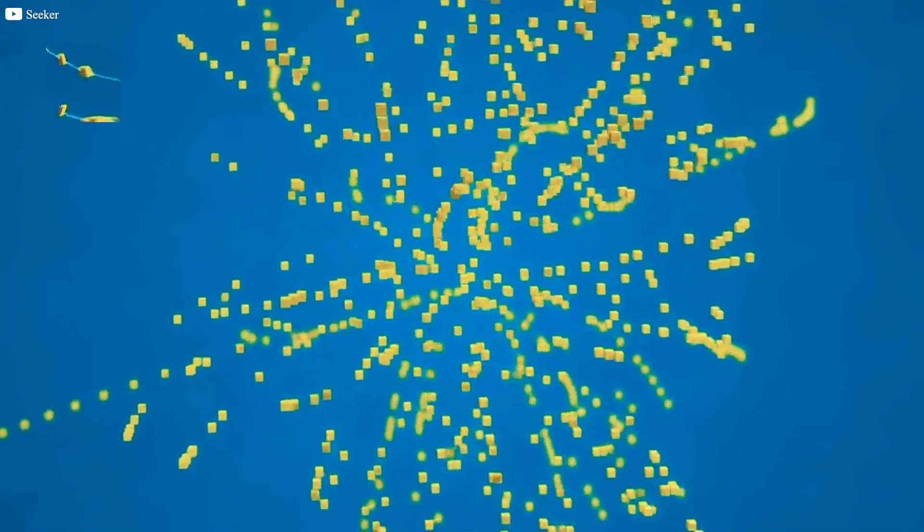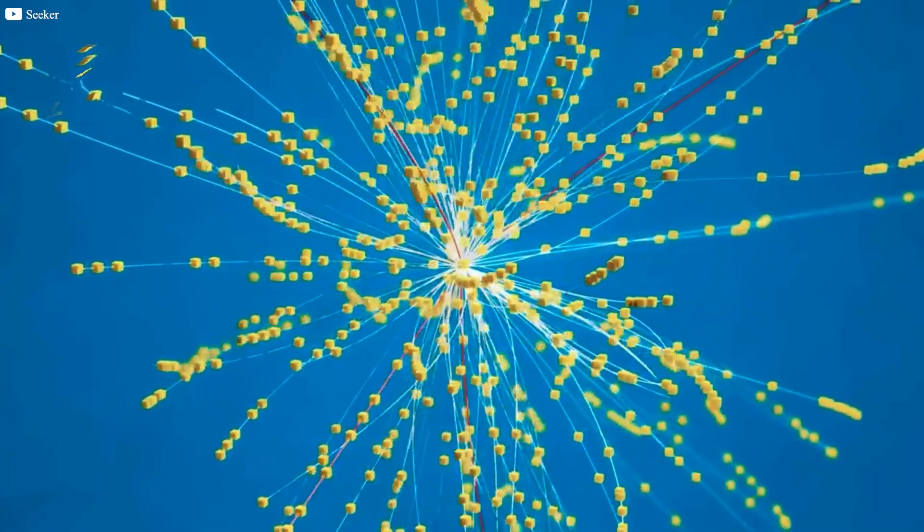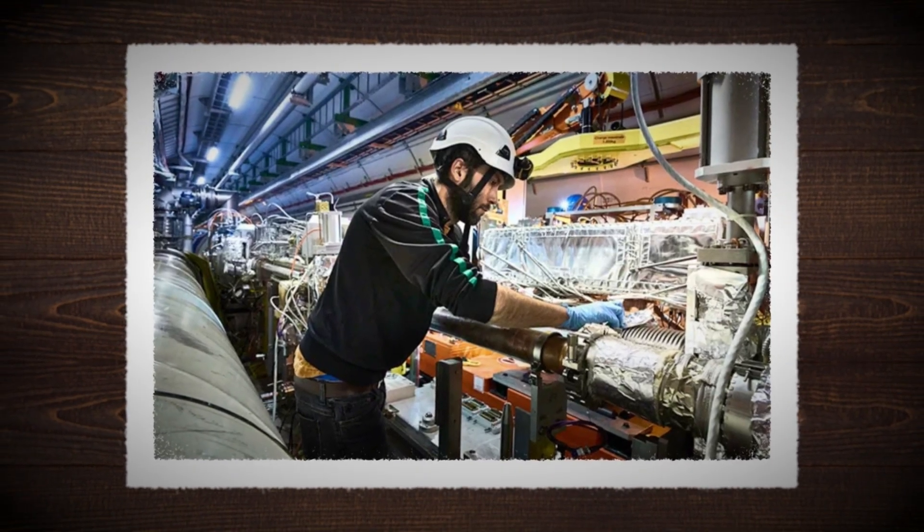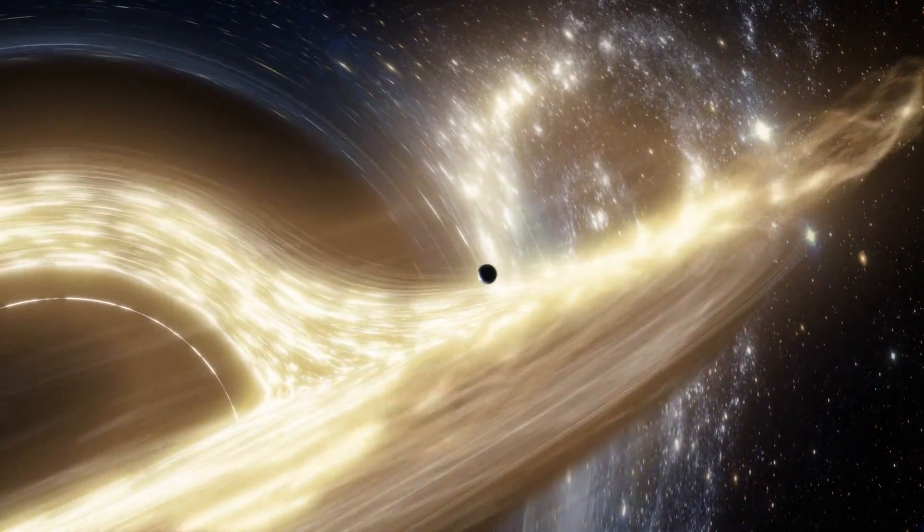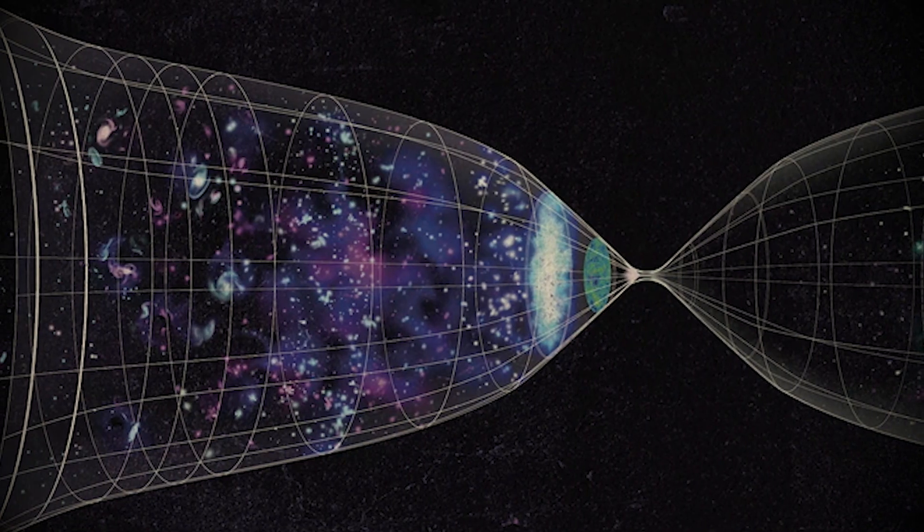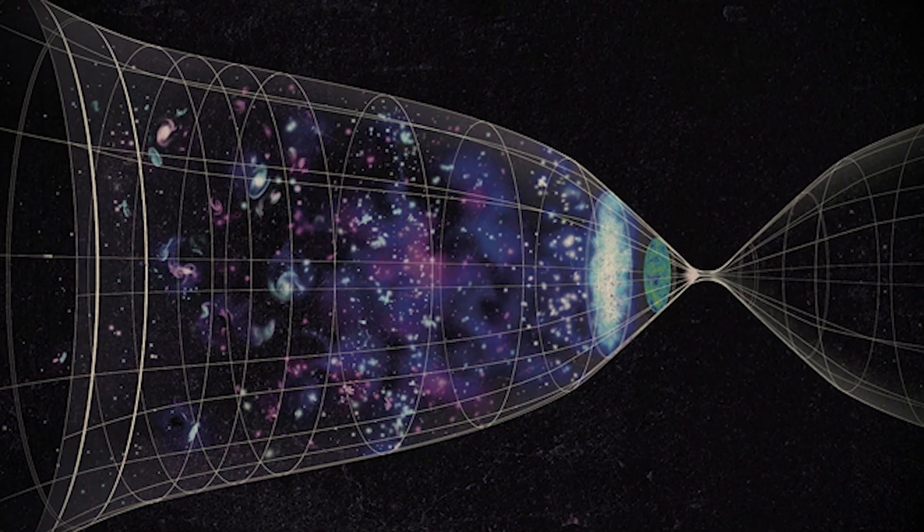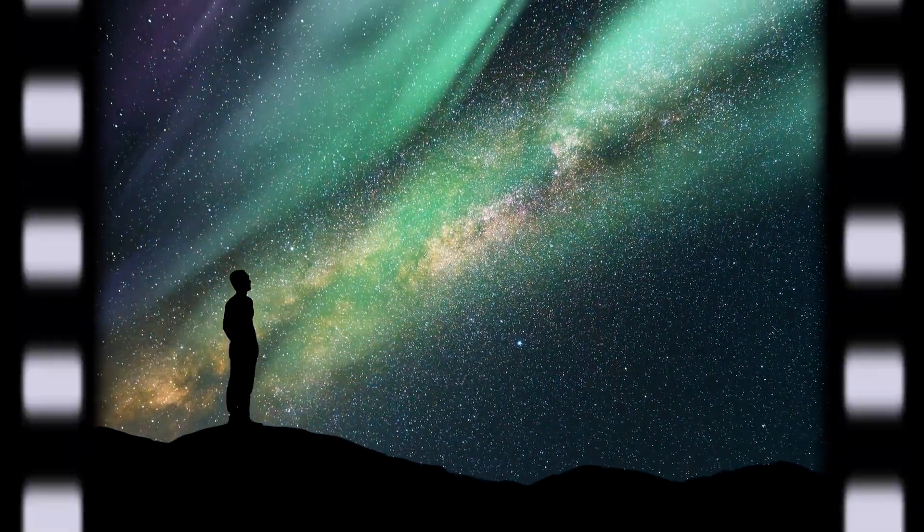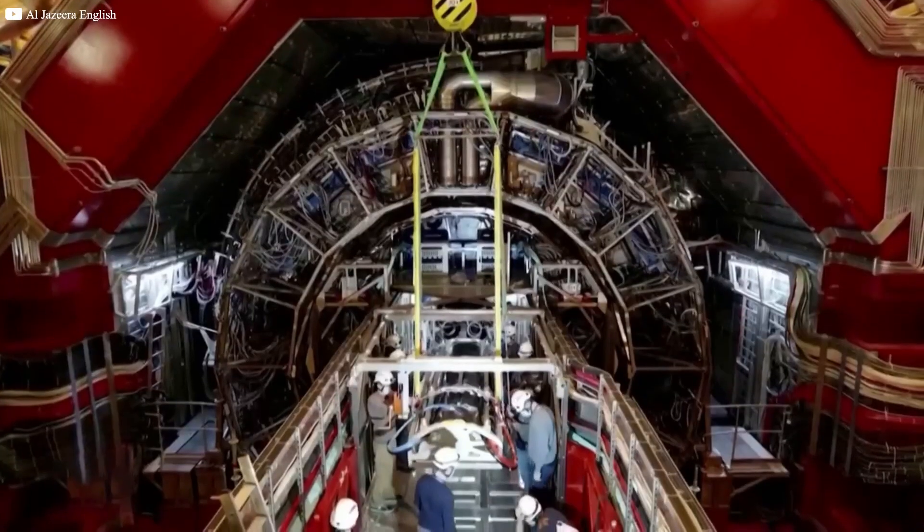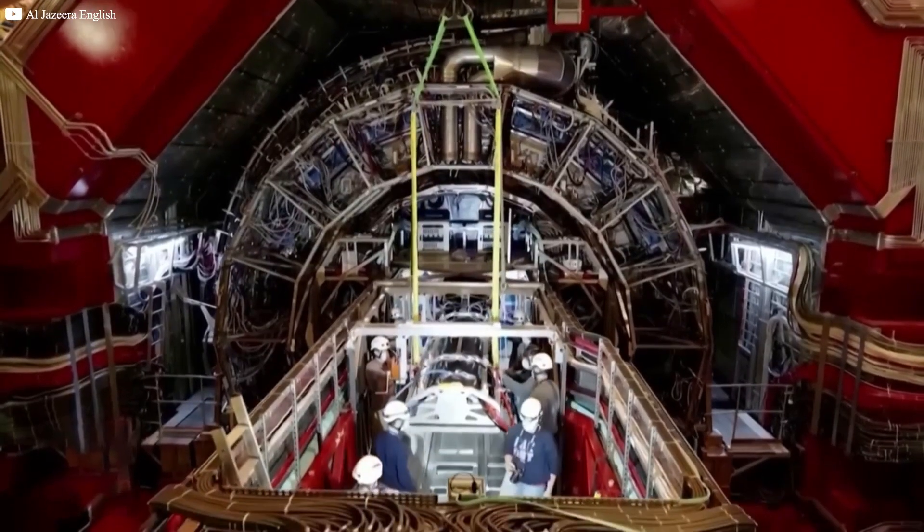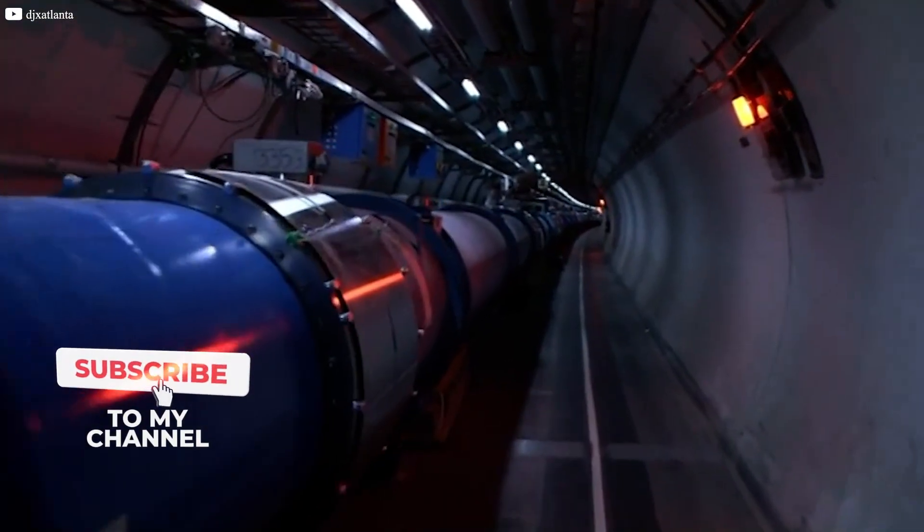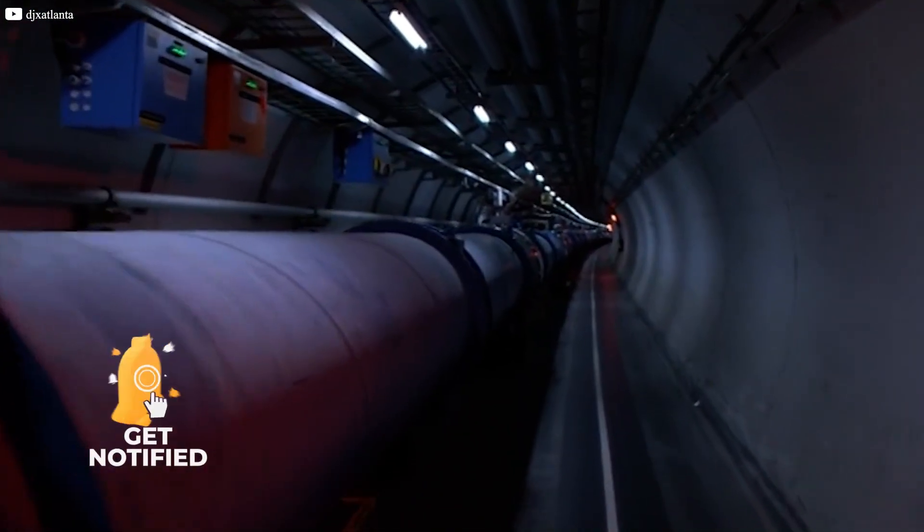The Collider has already reshaped our view of the universe. It proved the Higgs field, revealed new states of matter, and pushed the limits of human engineering. Yet with every success comes a shadow of doubt. Black holes, strange matter, or even a vacuum collapse remain possibilities, however remote. Perhaps they will never happen. Perhaps they already did, and we simply crossed into another version of reality. What matters is that we are balancing discovery with risk on a scale unlike any before. Should we continue pressing forward, or step back before curiosity consumes us all?